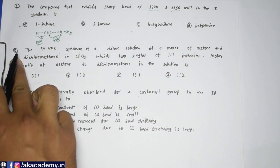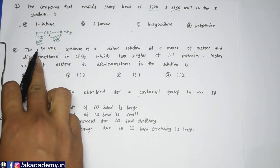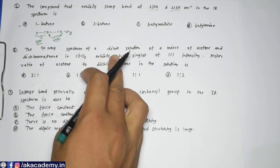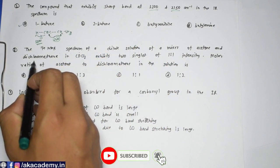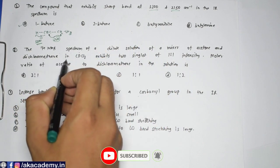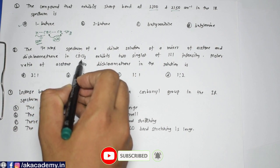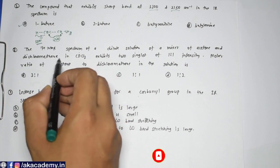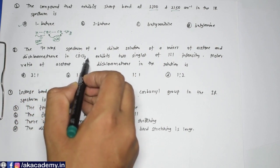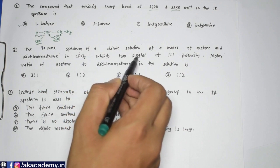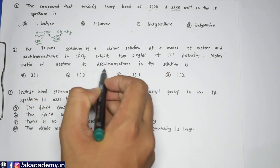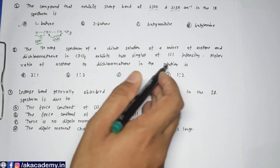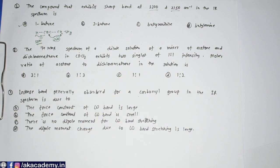The next question: in the ¹H NMR proton spectrum of a dilute solution of a mixture of acetone and dichloromethane in CDCl₃, it exhibits two singlets of 1:1 intensity. What is the molar ratio of acetone to dichloromethane in solution? To solve this, first find out the signals for acetone.